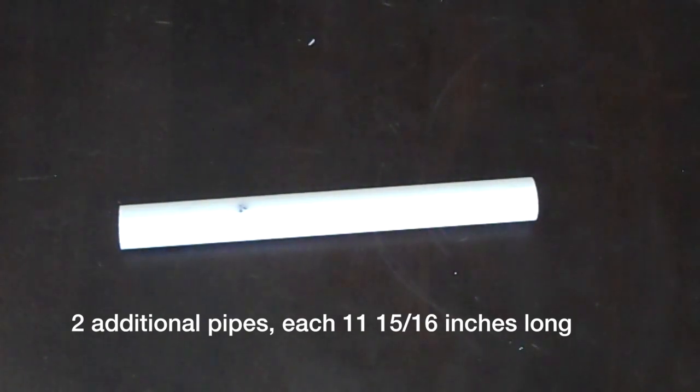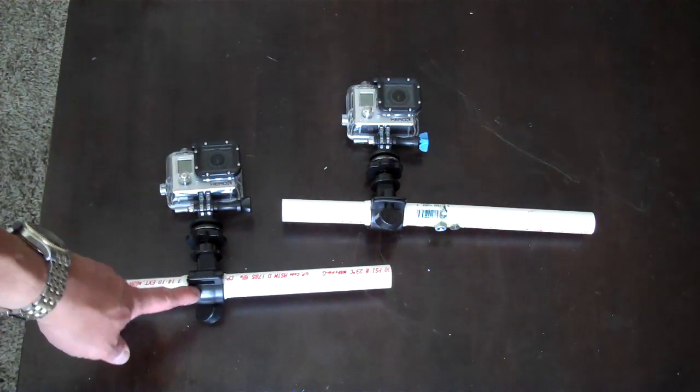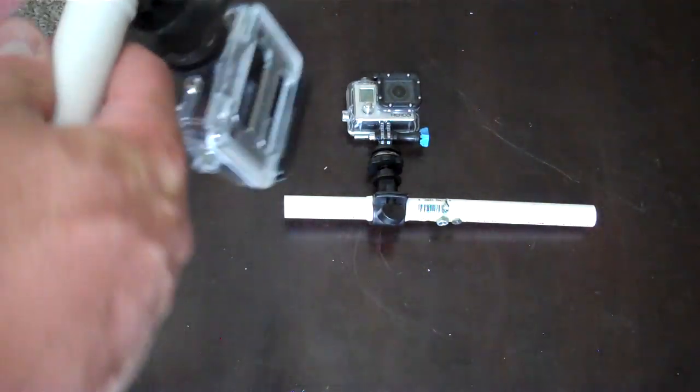On the two longer sections measure around 5 inches. This is where the GoPro mounts will be placed. I put tape around the PVC pipe so that my mounts will hold sturdy and so that they do not slip.